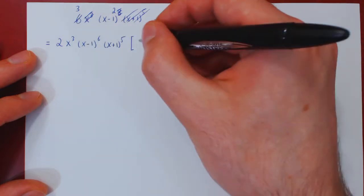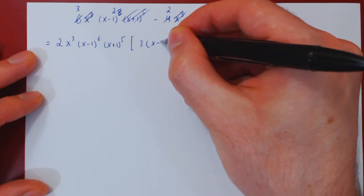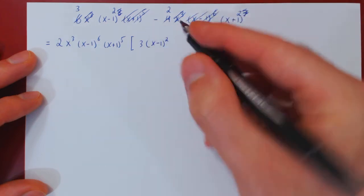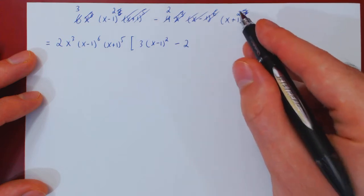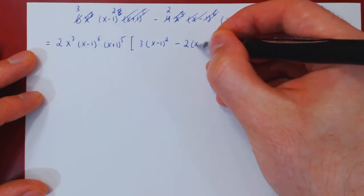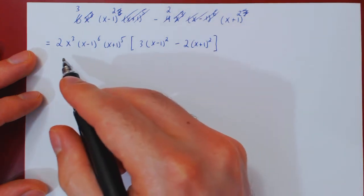So we have 3 times x minus 1 squared minus 2 times x plus 1 squared. This completes our first step.